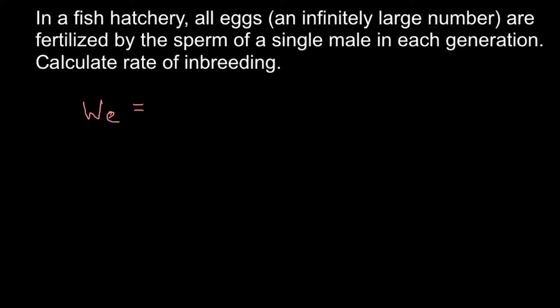Our problem doesn't have any numbers, but we can still solve it. You will see that any numbers we use will almost not affect our calculations, and this is what is interesting about this problem. For example, in our scenario, imagine we took sperm from one male and used 10,000 females in order to produce eggs, fertilized by the sperm of that one male.